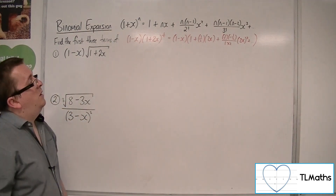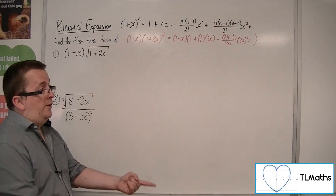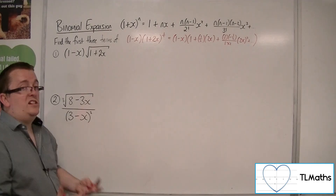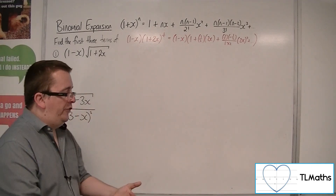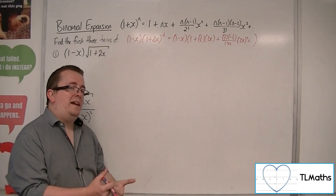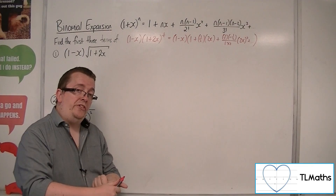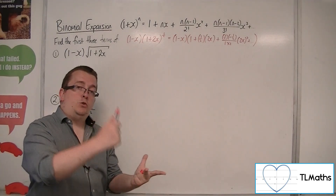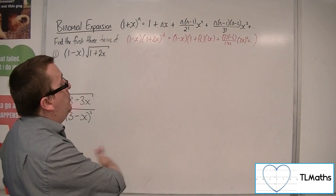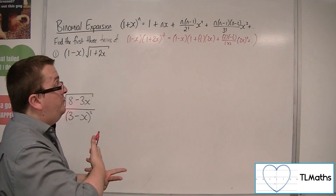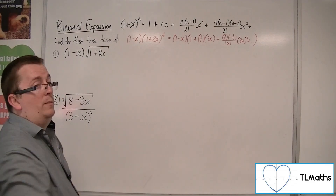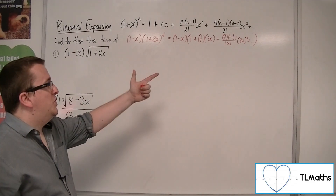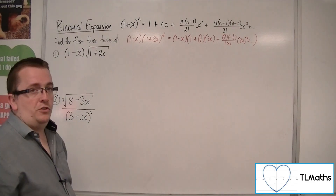I'm not going up to the cubic term because I need to find the first three terms here. We'd be expecting a constant term, a linear term, and a quadratic term. Anything beyond that I'm probably not going to need, which is why I'm adding plus dot dot dots there.